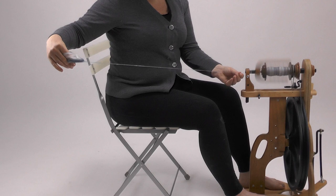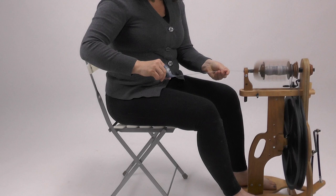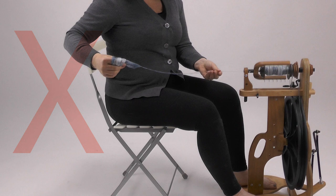It's important to keep your hands in this orientation. Many times spinners can create bigger problems by trying to correct an error in the wrong way. They see twist enter a thick spot between their hands, they keep treadling, and they drop the fiber from the fiber hand.